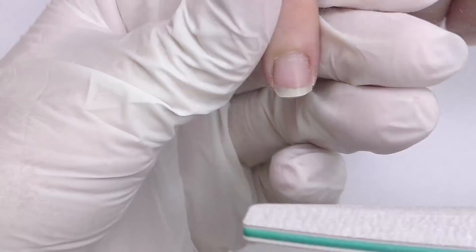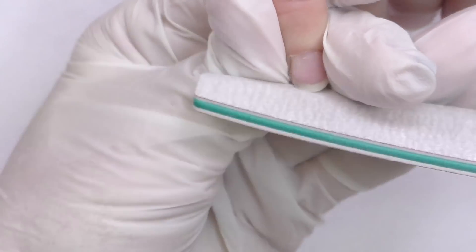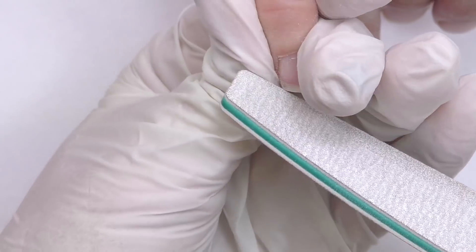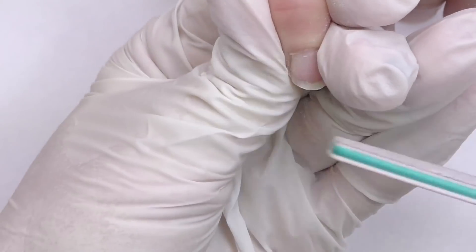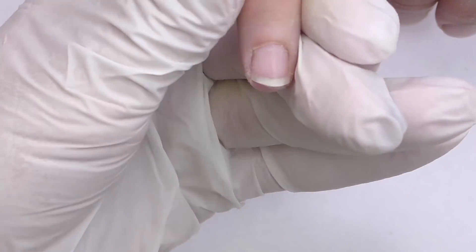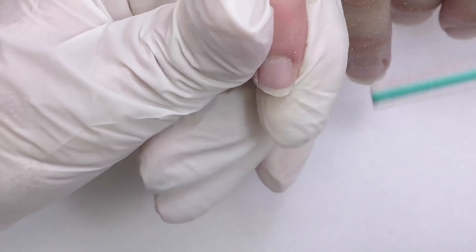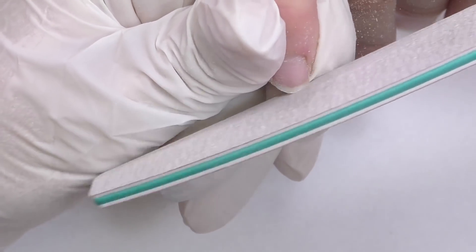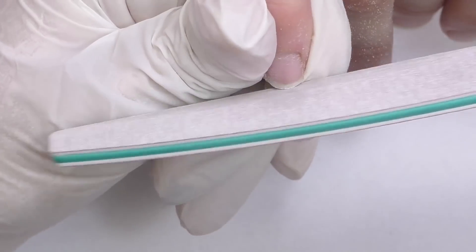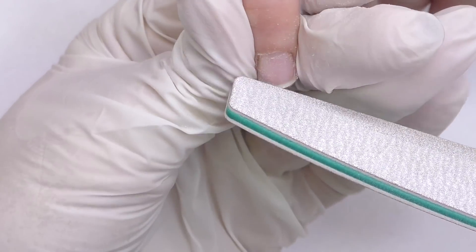Next step, filing the nails short. If you will file them shorter, it will be so much easier to fit the forms. We are going to use forms today and some of the nails are really long and since the shape is really wide, it is definitely wise to just file all the free edge away.